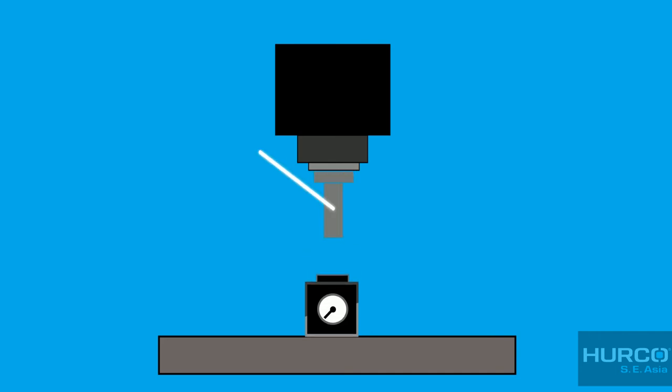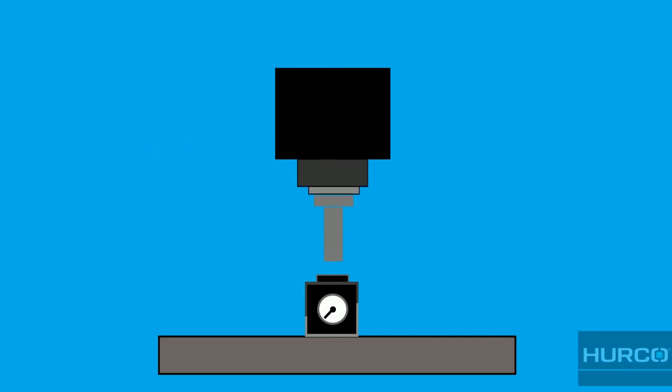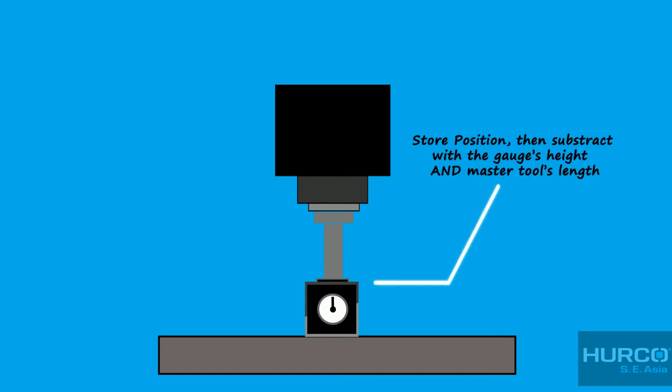You can also use a master tool to do the Z-reference measurement. Use the tip of the master tool to touch the height gauge and store the position. Don't forget to subtract value with the gauge's height and master tool's length, followed by Enter.